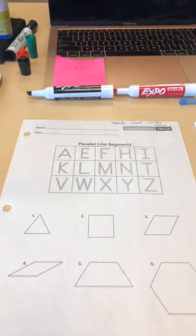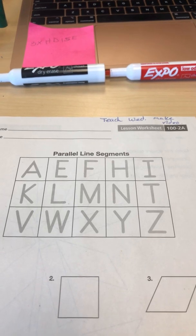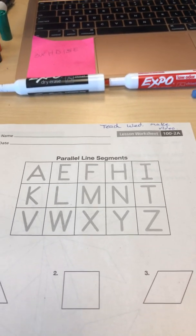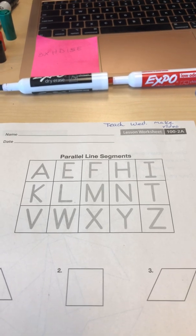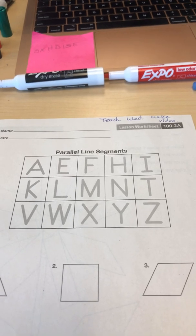Hi parents! Today is lesson 100. I didn't teach the part about parallel line segments. So parallel line segments are two line segments that are like a railroad track. They don't ever meet.